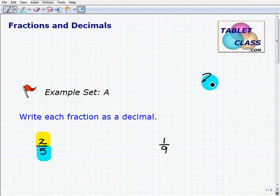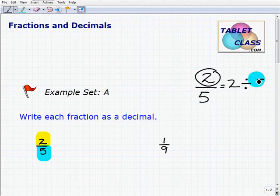2 fifths, 2 fifths is right here, means 2, the fraction bar is division, divided by 5. So we're going to get a calculator out and do this. Now you can do this by hand, but there's really no sense when you have a calculator.